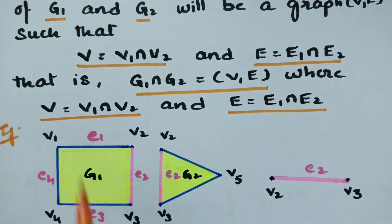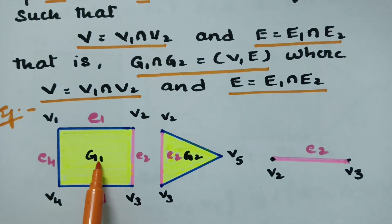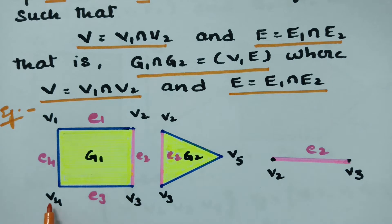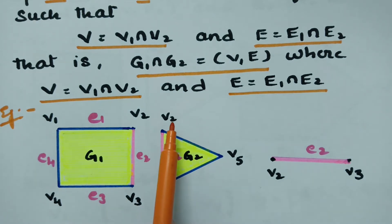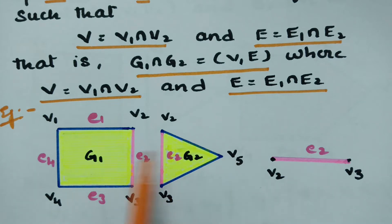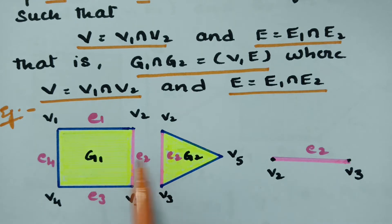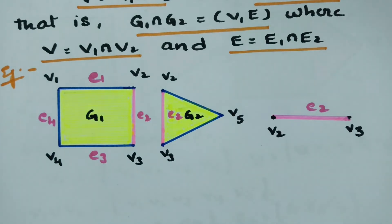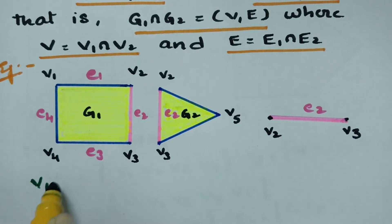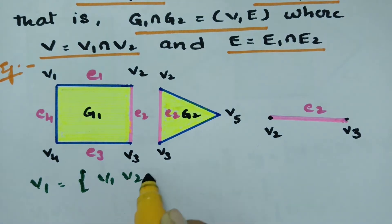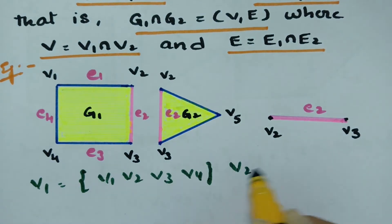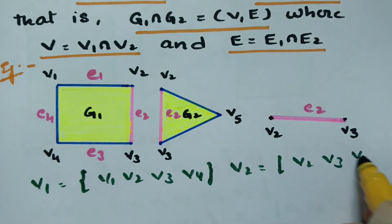Here is an example. In graph g1 we have vertices v1, v2, v3, and v4, and in g2 we have vertices v2, v3, and v5. The edges in g1 are e1, e2, e3, e4, and g2 also has edges including e2, which is common between the two graphs.